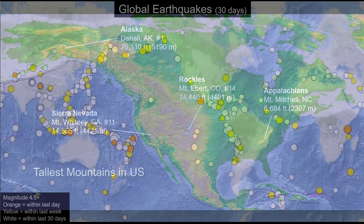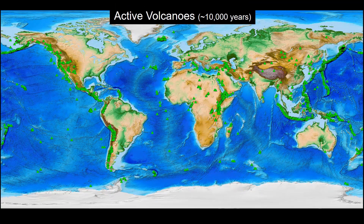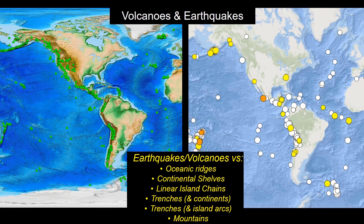Shifting gears from features to processes, let's look at where we find earthquakes. This map shows the distribution of moderate to large earthquakes over a recent 30-day period. You may notice that it isn't a random pattern, and that earthquakes seem to be concentrated near some of the features we discussed earlier. Let's do the same thing for recent volcanic eruptions — thinking about volcanoes that erupted in the last 10,000 years. Which of the features listed best match up with the distribution of earthquakes and volcanoes?